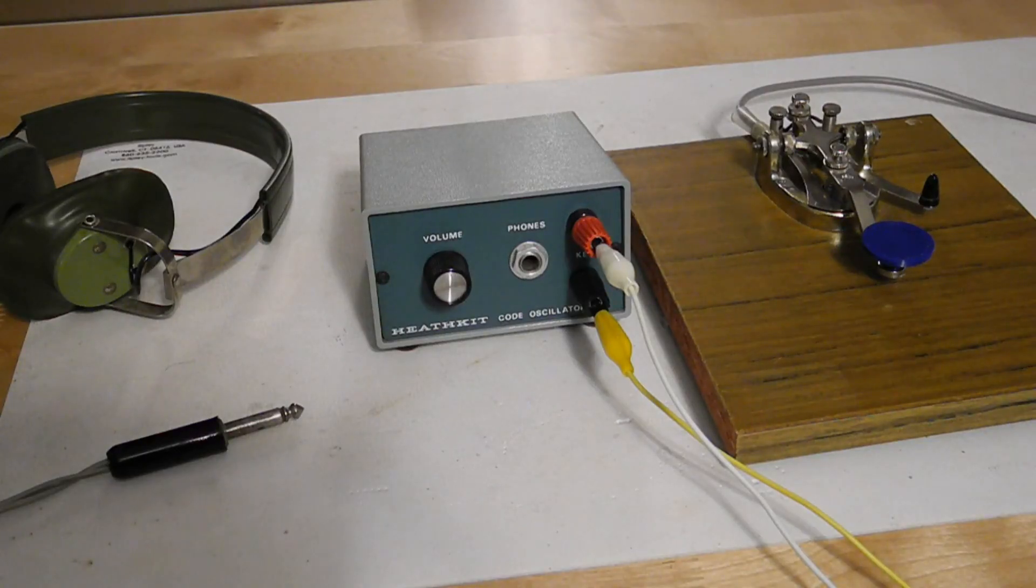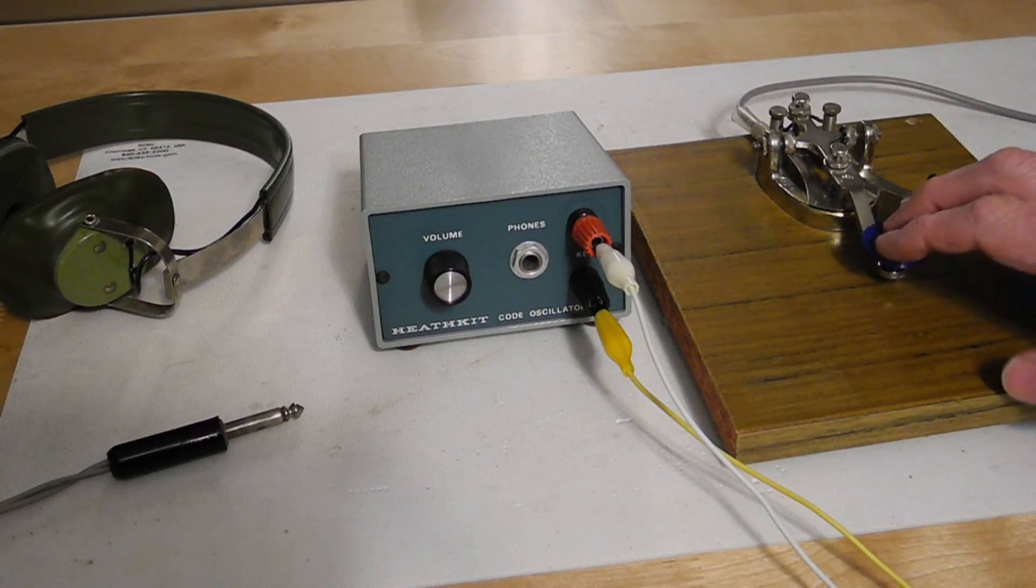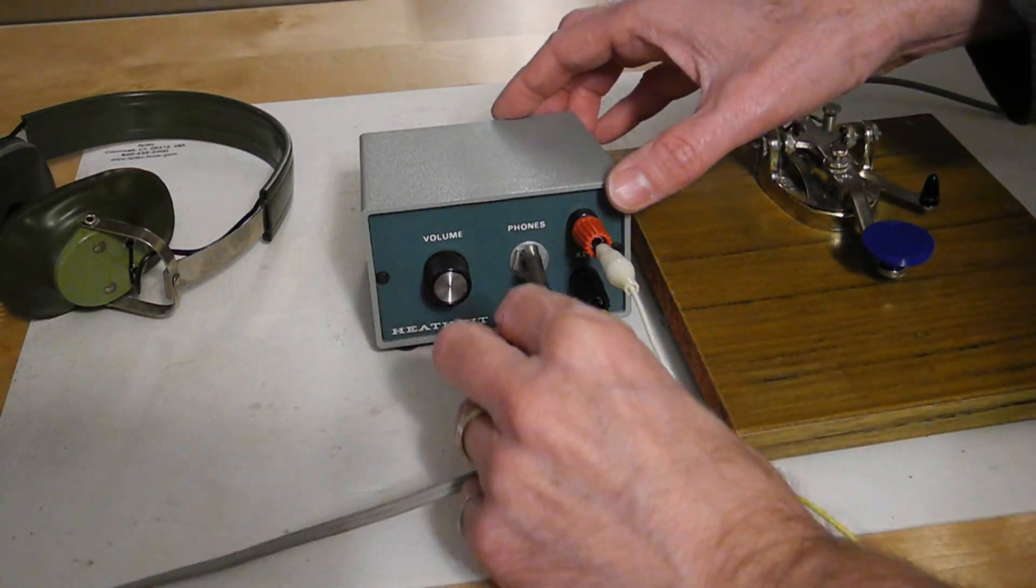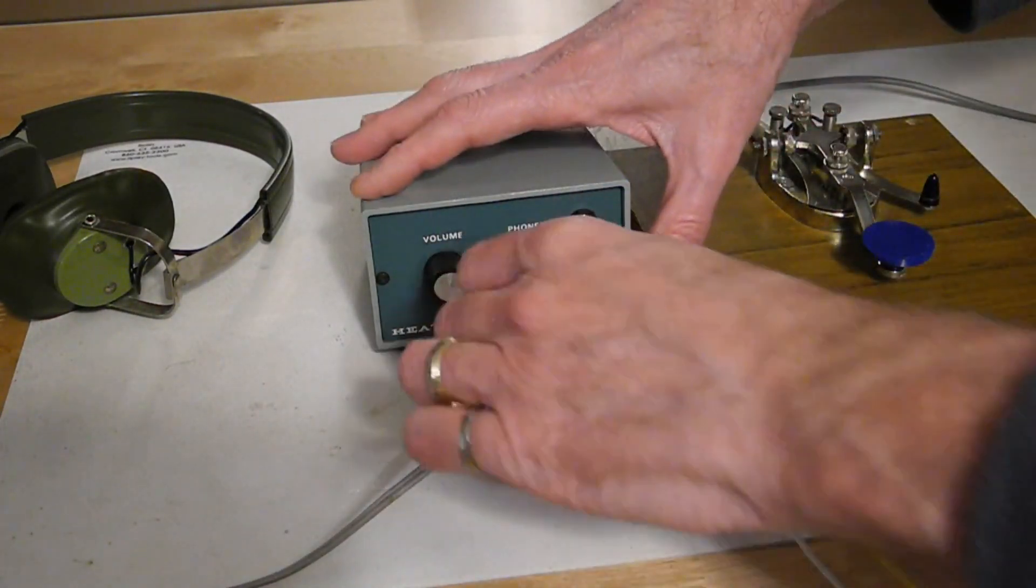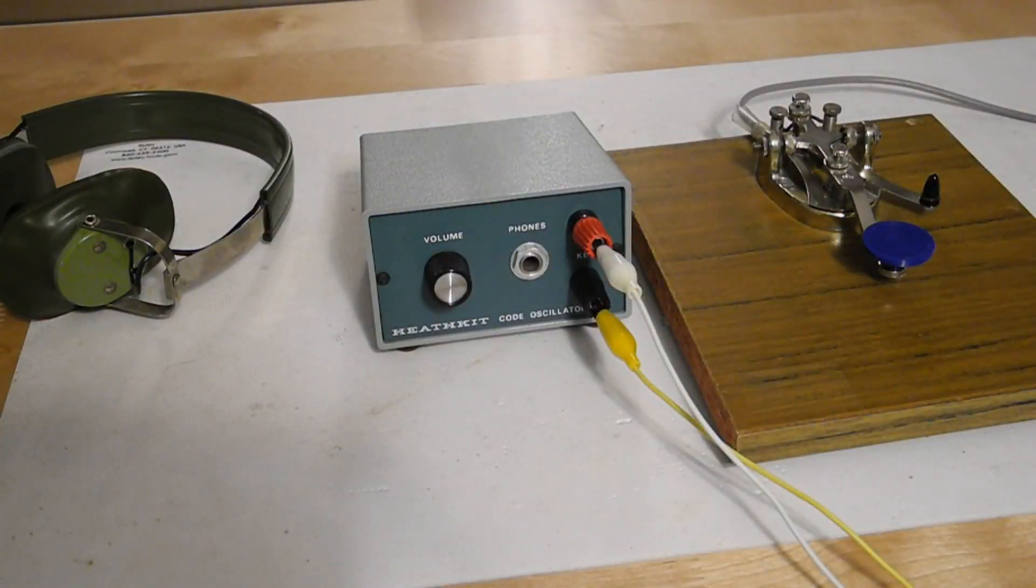The HD 1416 connects to a Morse code key by a set of terminals. When the key is closed it produces a tone through a small speaker. Headphones can also be plugged into a quarter inch jack in which case the speaker is silenced.